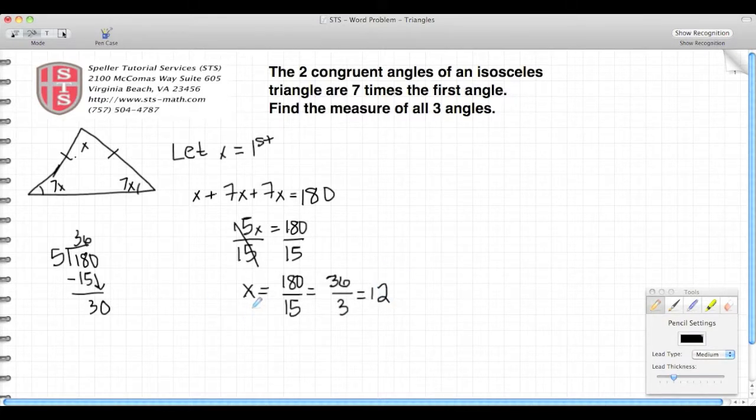So I just found that x, or my first angle, is actually equal to 12, in this case 12 degrees. Now using this fact, I'm going to go back and solve for my other angles. So I have x equals 12. The other angles are 7 times x, or 7 times 12, which is 84 for the other two angles.